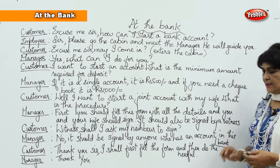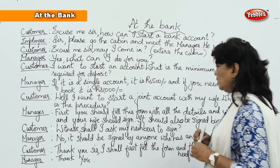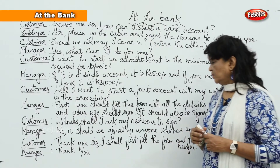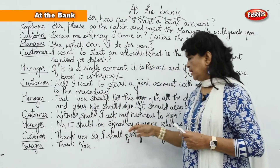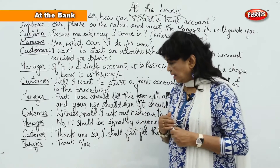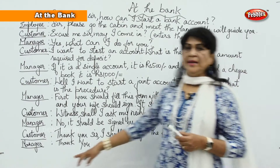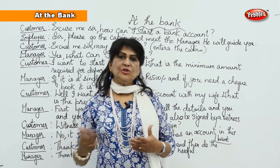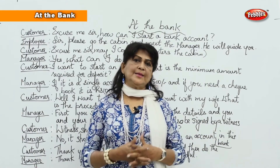The customer says, 'I want to start a joint account with my wife — what is the procedure?' The manager says, 'First you should fill this form with all the details, and you and your wife should sign it. It should also be signed by a witness.' The customer asks, 'Witness — shall I ask my neighbour to sign?' The manager says, 'No, it should be signed by anyone who has an account in this bank.' The customer says, 'Thank you sir, I shall first fill the form and then do the needful.' This dialogue between a bank manager and a customer will be really useful if you want to start a bank account — you can practice this dialogue.